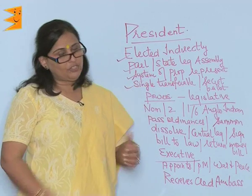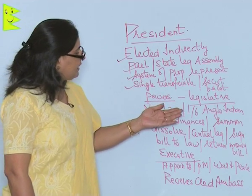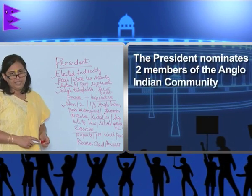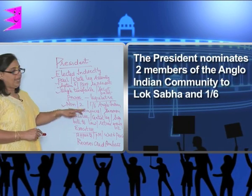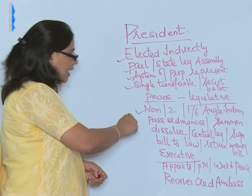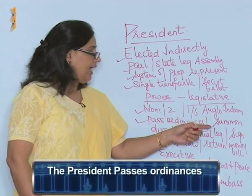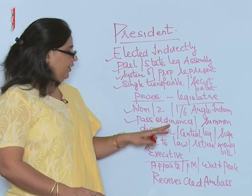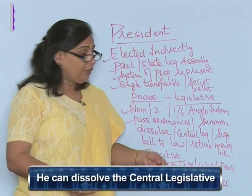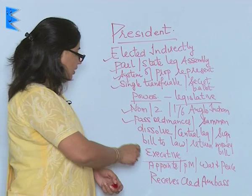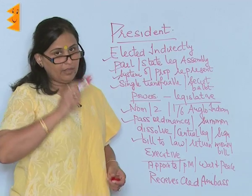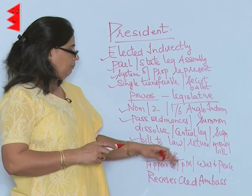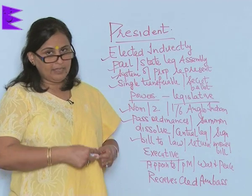After the election of the President, we must know about the powers of the President. As far as legislative powers are concerned, he nominates two members of the Anglo-Indian community to the Lok Sabha and one-sixth of the members to the Rajya Sabha. He passes ordinances when the Parliament is not in session, and he can summon, dissolve, or even prorogue the central legislature. Unless he signs a bill, it does not become a law — his signature is a requirement.